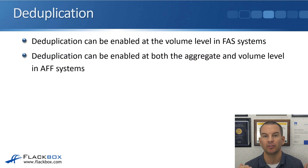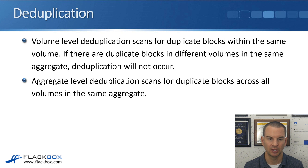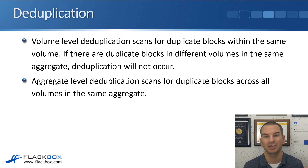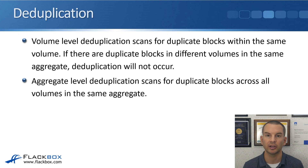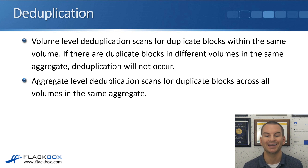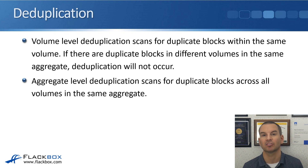Deduplication can be enabled at the volume level in FAS systems, and at both the volume and aggregate level in AFF systems. Volume-level deduplication scans for duplicate blocks within the same volume. If duplicate blocks are in different volumes — same aggregate or different aggregates — deduplication will not occur on FAS systems. Aggregate-level deduplication on AFF scans for duplicate blocks across all volumes in the same aggregate, giving extra flexibility.